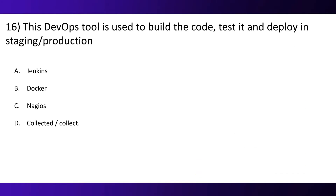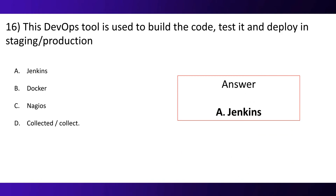Question 16. This DevOps tool is used to build the code, test it, and deploy in staging or production. Option A, Jenkins. Option B, Docker. Option C, Nagios. Option D, Collectd. And the correct option is A — Jenkins.